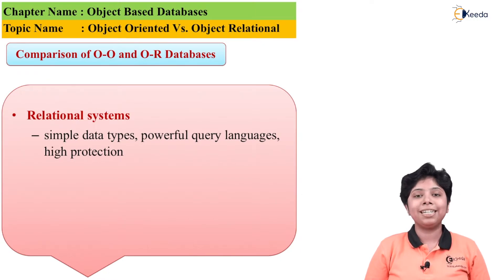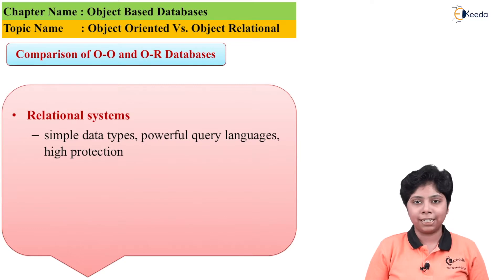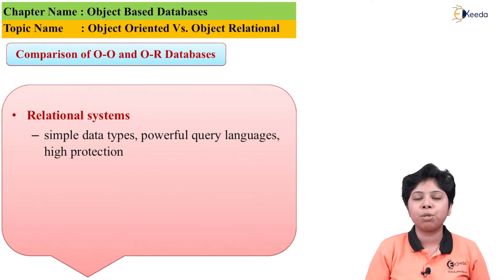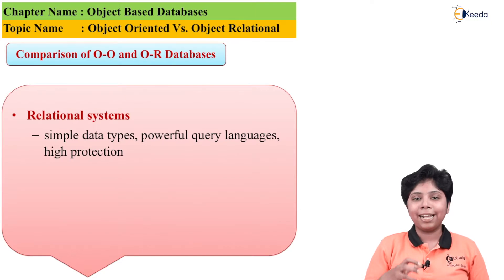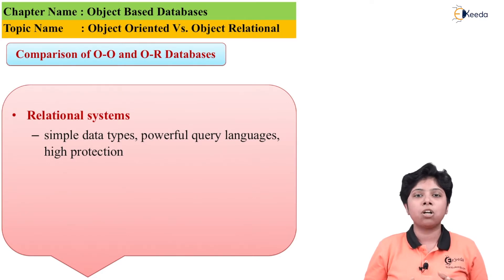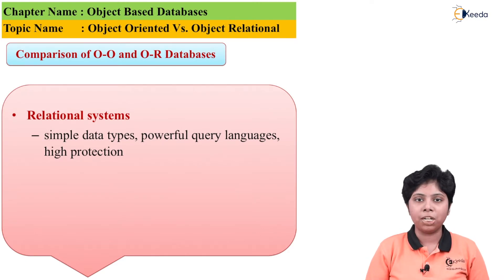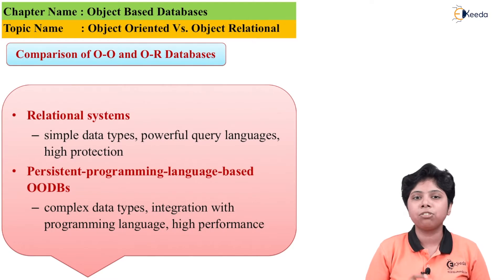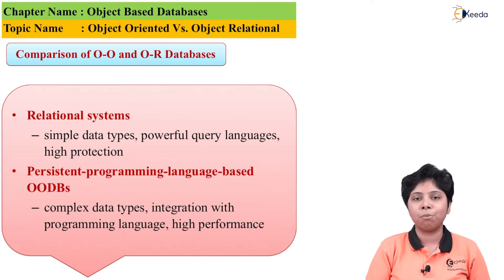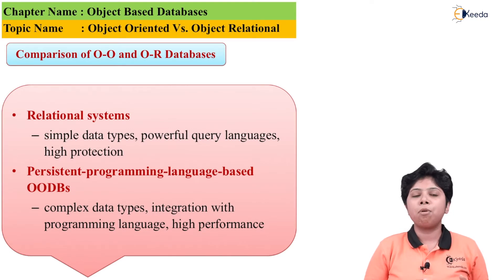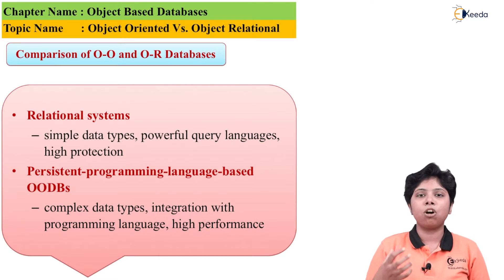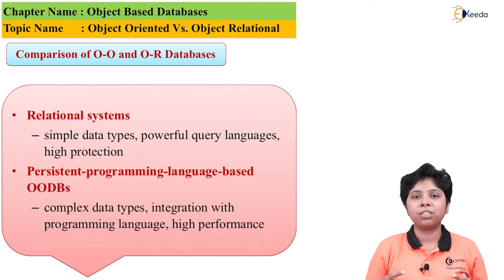SQL, being a declarative language with limitations on query power, provides the most protection to the data and takes less computation time compared to object-oriented languages. However, its access time is much higher because SQL generally deals with main memory applications, and when there is a large database in secondary memory, the access time will be very high for SQL to fetch data from the large database into main memory. These are the pros and cons of having a relational system with an object-oriented layer built on top.